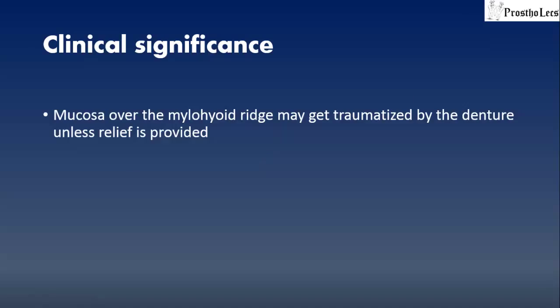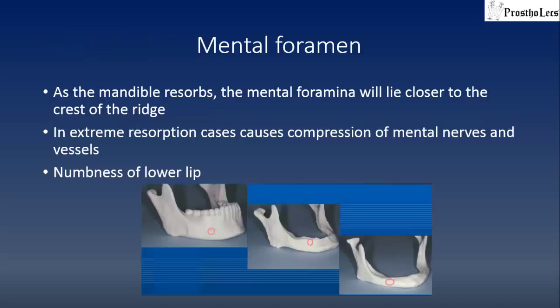Clinical significance: the mucosa over the mylohyoid ridge may get traumatized by the denture unless relief is provided. The more the resorption of the mandible takes place, the closer the mental foramen will lie to the crest of the residual ridge. There is a possibility that the mental nerves and vessels may be compressed by the denture, causing numbness of the lower lip. This is why relief should be provided in this area.